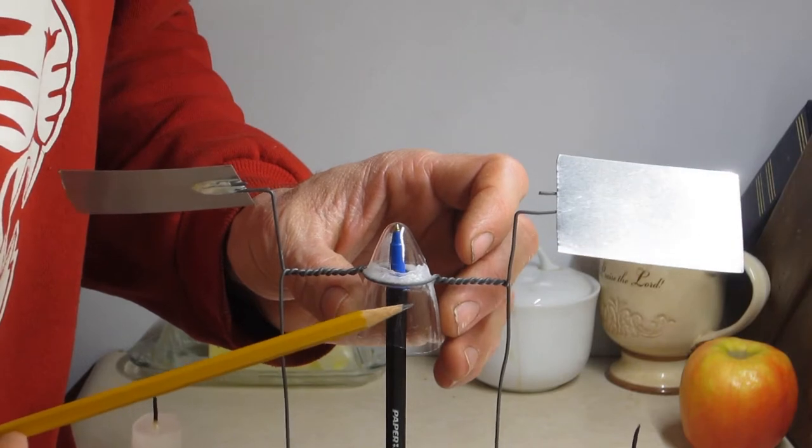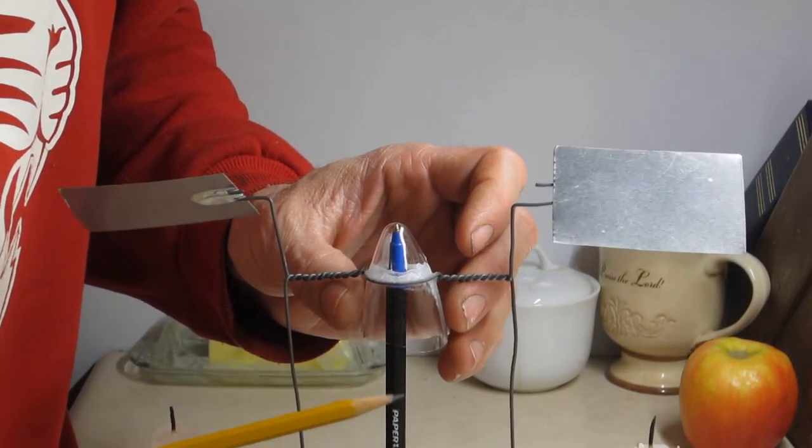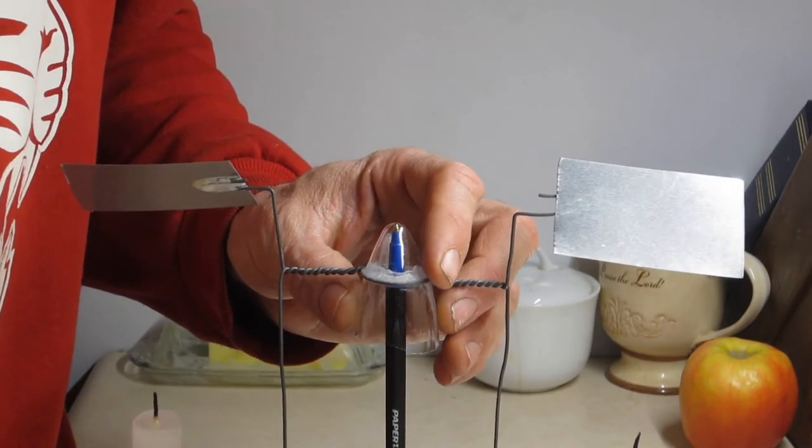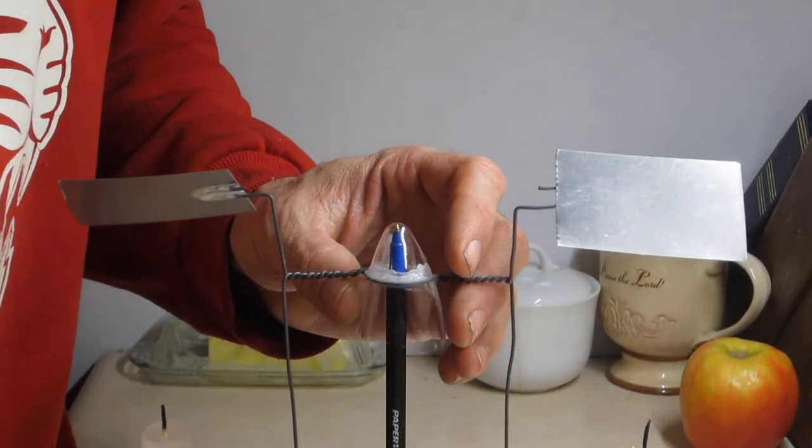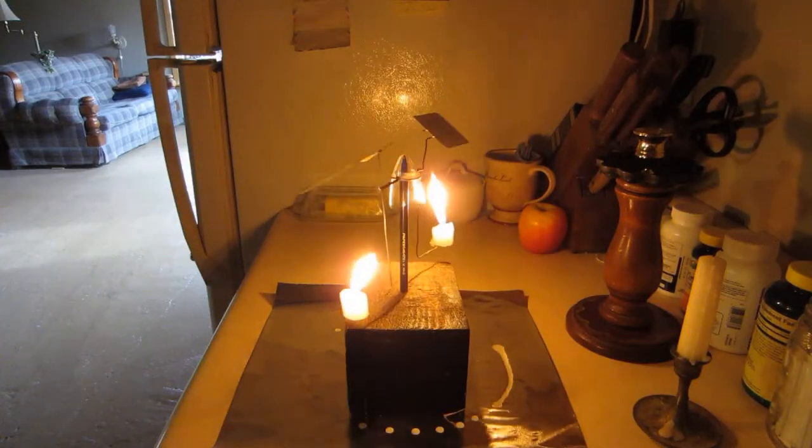You could even use a large size test tube here. The main thing is it's not too long. Because if it's too long and it tilts, then it's going to start dragging against the ink pen or whatever it's riding on.